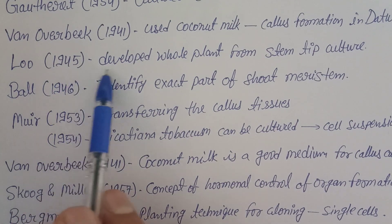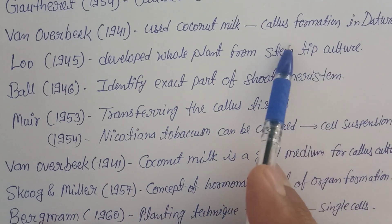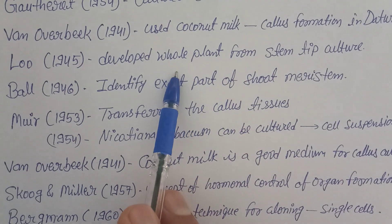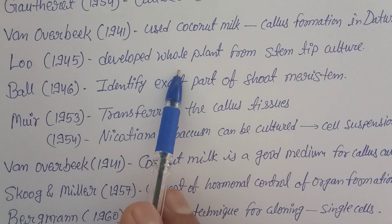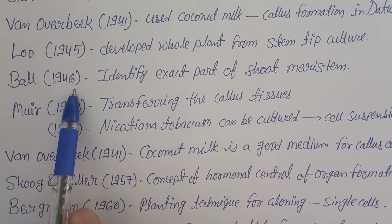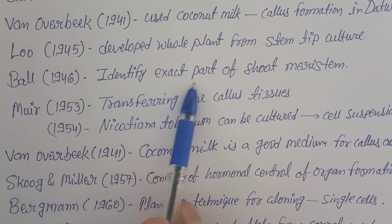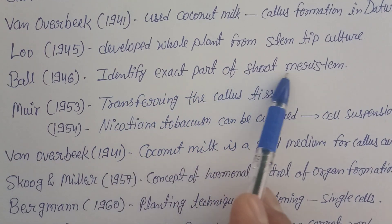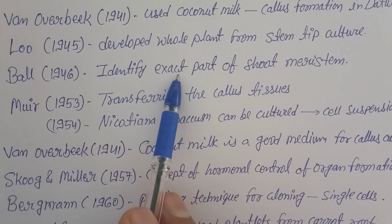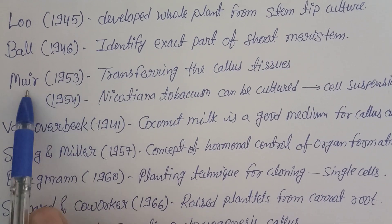Löw in 1945 developed a whole plant from simple stem tip culture. He took the stem tip and was able to develop a new whole plant from it — a very good achievement. After one year, Ball — B-A-L-L — in 1946 identified the exact part of the shoot meristem that can be cultivated and grown further.